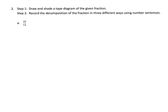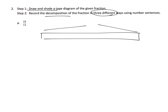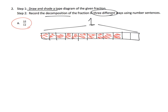For the next problem, we draw our bar — this whole bar represents one — and we cut it into 12 pieces. We start by cutting it into four pieces, then cut each one into three pieces, because four times three is twelve. The numerator is ten, so we shade in ten of those twelve pieces, leaving two unshaded. There is our picture of ten-twelfths.